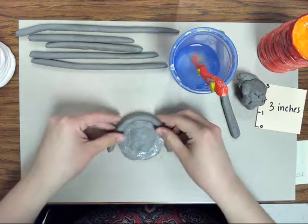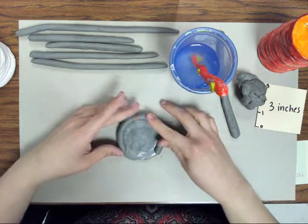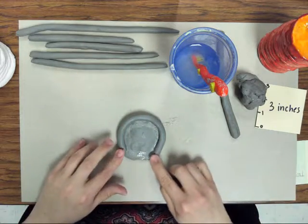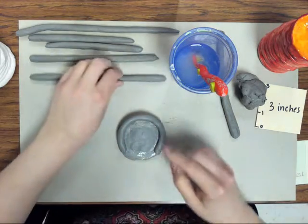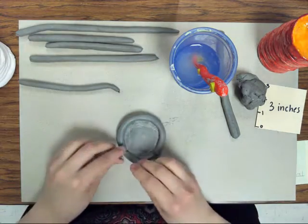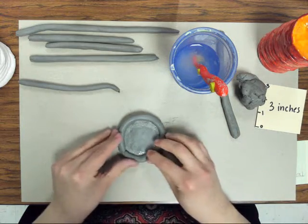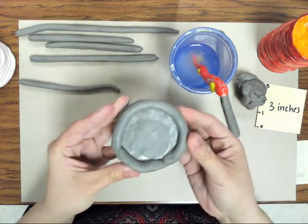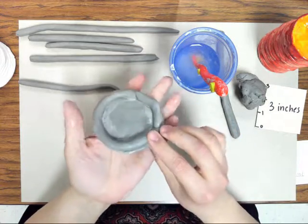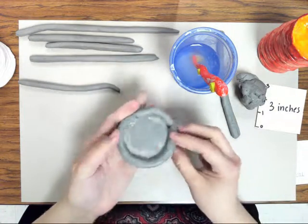Then you'll take one of your coils and you'll lay it on top. Now notice my coil didn't go all the way around, so I'm going to have to take another piece from another one and add it on right here. You can see I've attached it. It goes all the way around and it's laying on top of the circle.